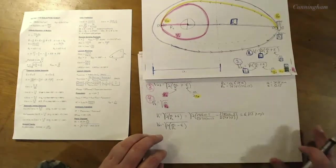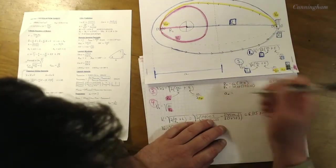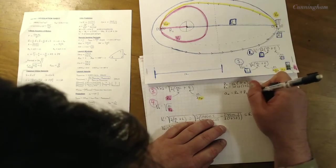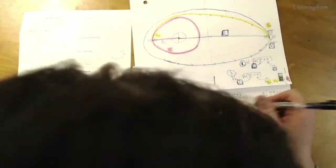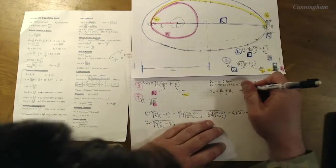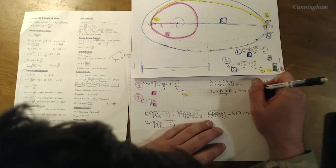And then like we said, mu or epsilon, sorry, specific mechanical energy is negative mu over 2a, which a? Well the a we're given of the mission orbit. Never forget your two, that messes things up a lot for folks.